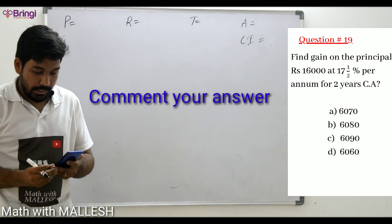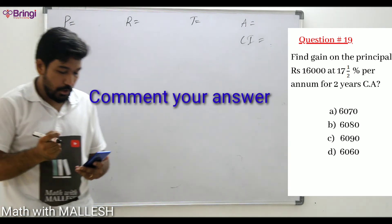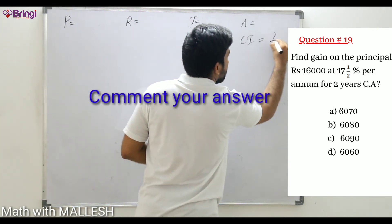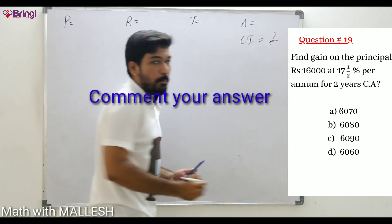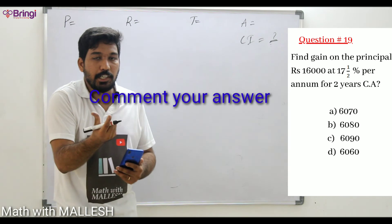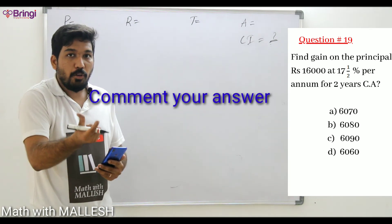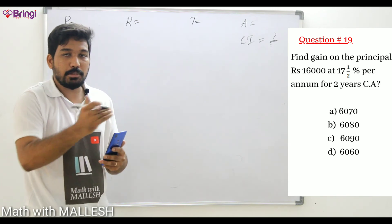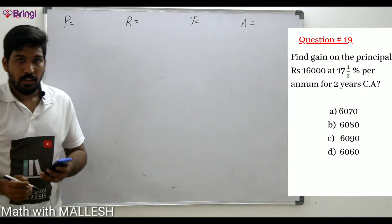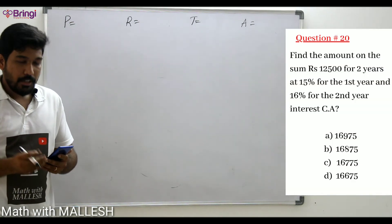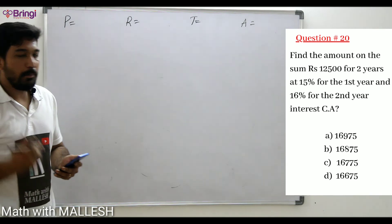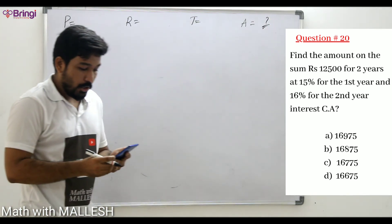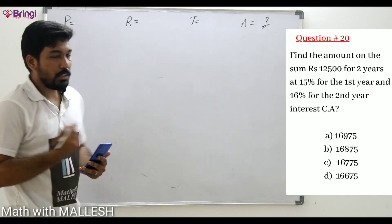Question number 19: Find the gain. New terminology — 'gain' means compound profit, how much interest he got, how much compound interest he received. All these terms — gain, profit, interest, compound interest — relate to the same thing. Question number 20: Find the amount on the sum of 12500.